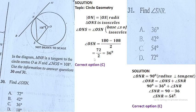Question 31: find angle SNR. The radius ON is perpendicular to the tangent MNR, so angle ONR = 90°. Angle SNR = 90° − angle ONS = 90° − 36° = 54°. The correct answer is option C.